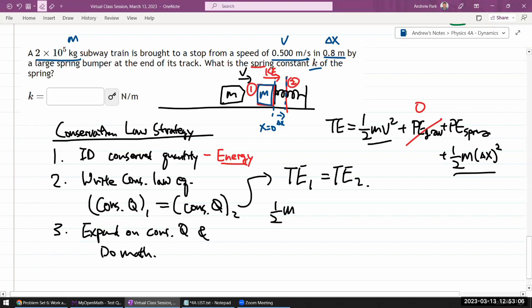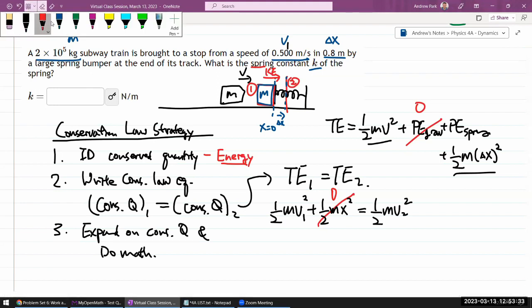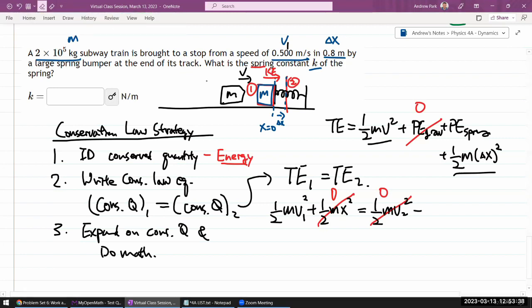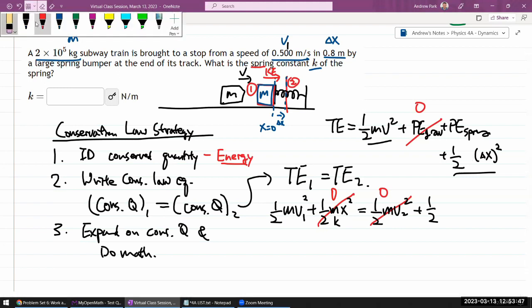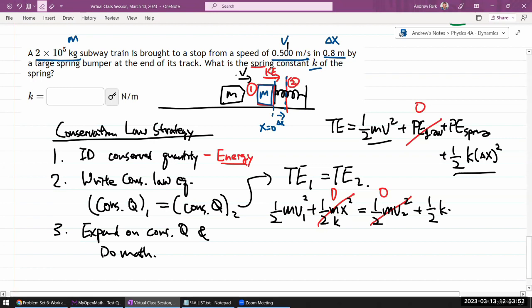We have potentially gravitational potential energy being involved or we have potentially spring potential energy being involved. In this particular case, it looks like it's level ground. We don't need to involve gravitational potential energy. For spring potential energy, the expression is one half k displacement from equilibrium squared. I'm going to write this out for the two snapshots. So one half mass times v1 squared plus one half k x1 squared. At the initial stage of snapshot one, the spring hasn't compressed at all, so this will be zero. In snapshot two, the thing has come to a stop. So one half m v2 squared will just be zero because the train has come to a stop. And we have plus one half k times, now this is where the displacement matters, delta x squared. I think it gives us a fairly simple expression. One half m v1 squared is equal to one half k delta x squared.